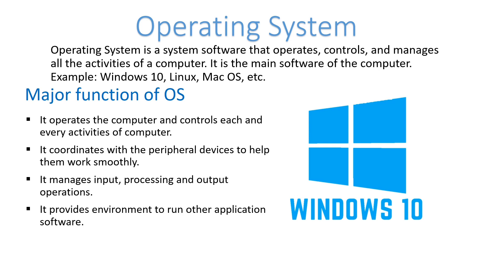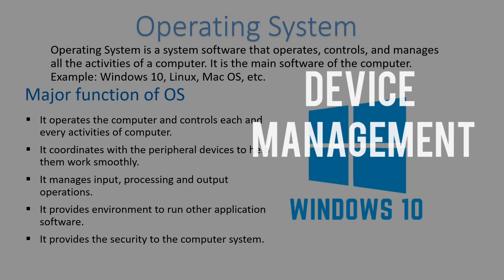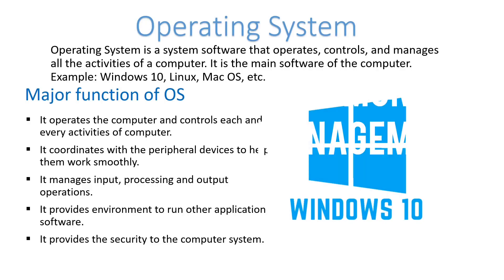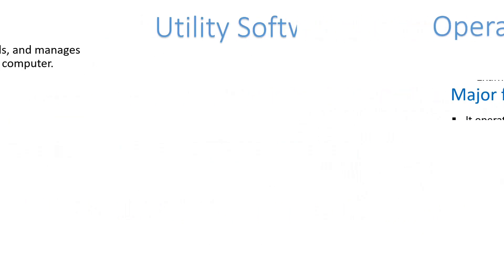The operating system provides an environment to run other applications; without it, we cannot run other application software. It also provides security to the computer system, allowing us to set passwords. Other major functions include device management, file management, process management, and memory management.